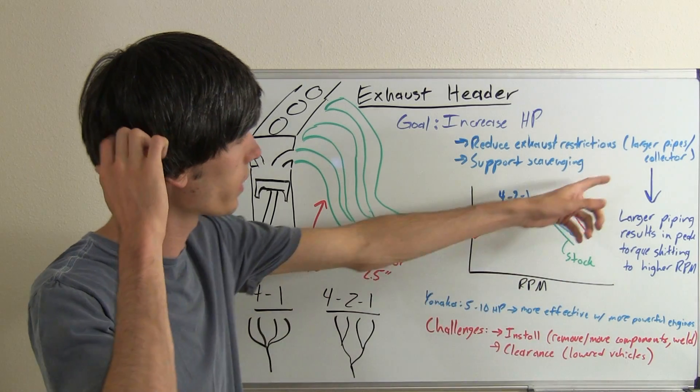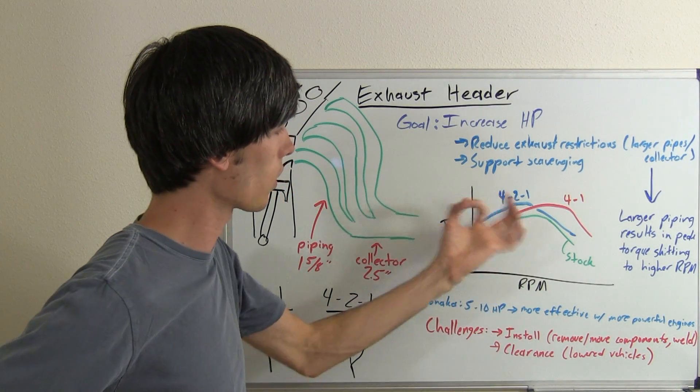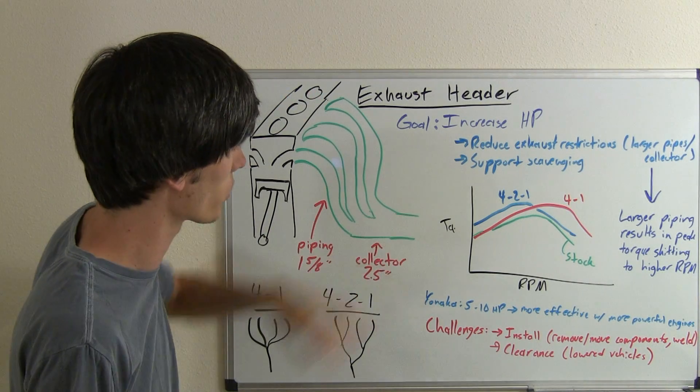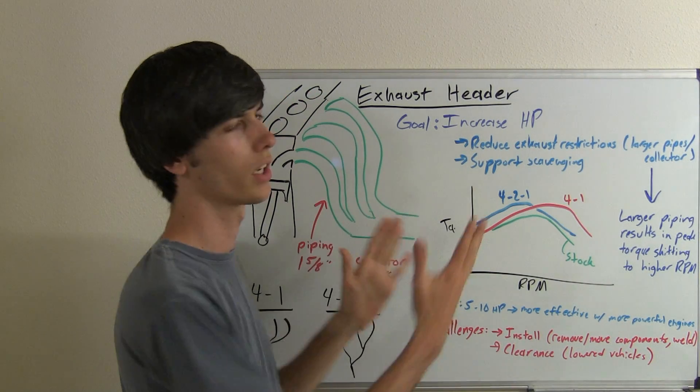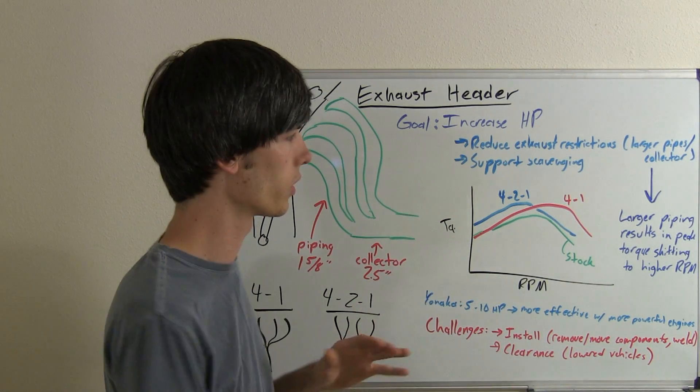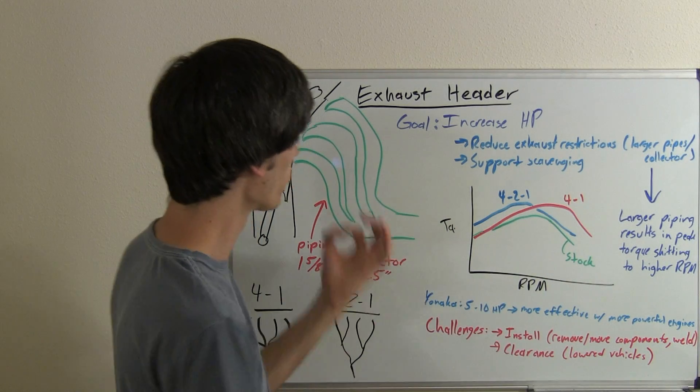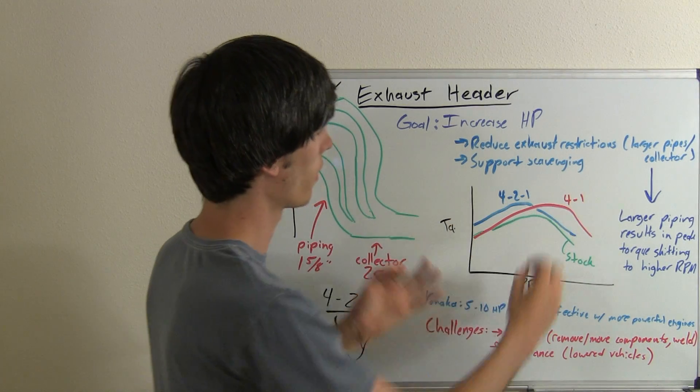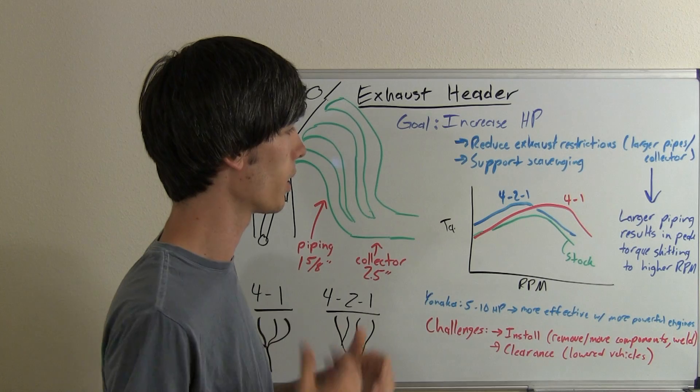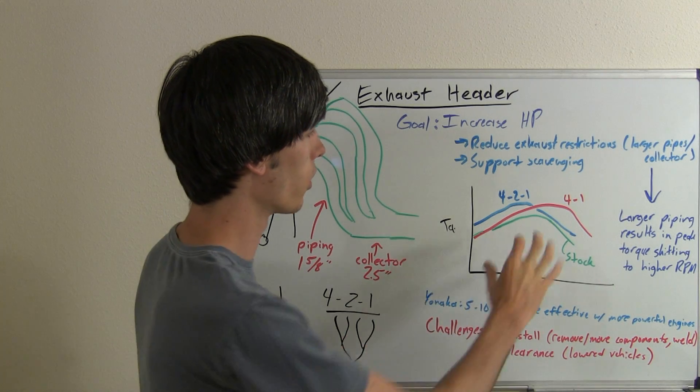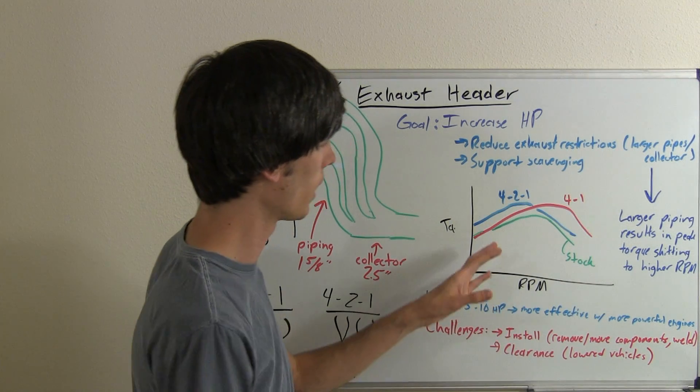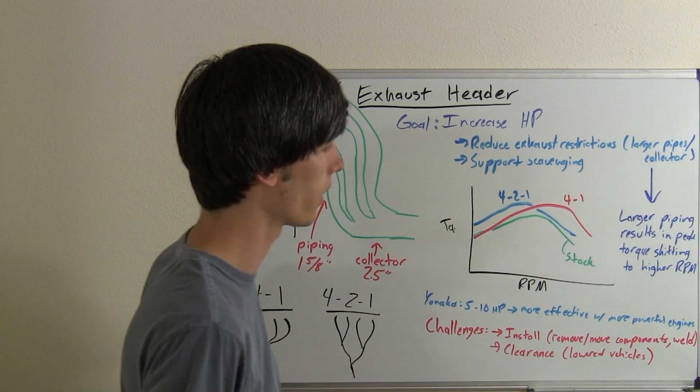One of the things with these pipes is the larger you create these individual pipes and the larger the collector is, you're shifting where the peak torque is going to occur to a higher RPM. Larger piping, you're going to have better flow at higher RPM when you've got a lot more flow. So it will shift that peak torque up into the higher RPMs.